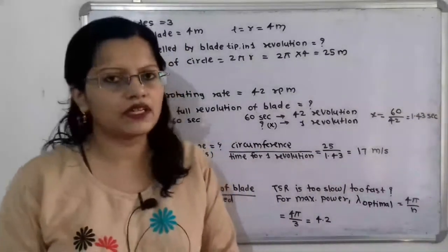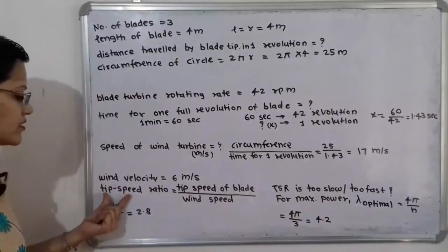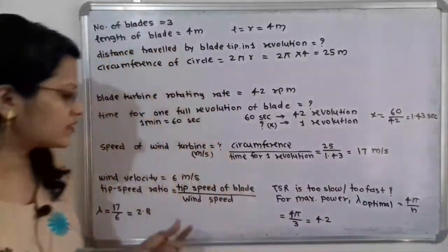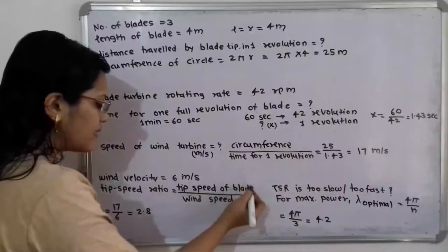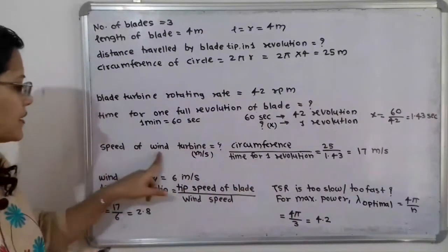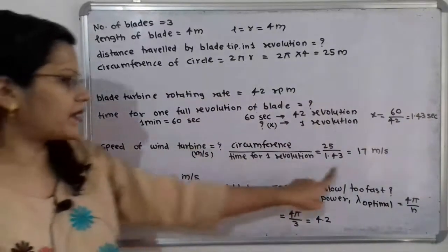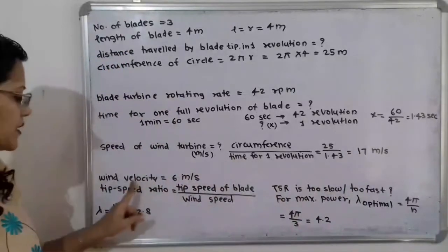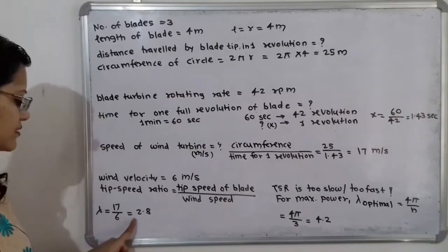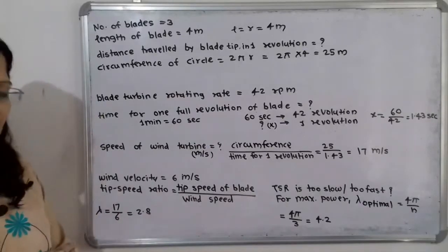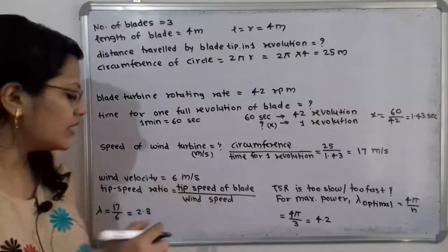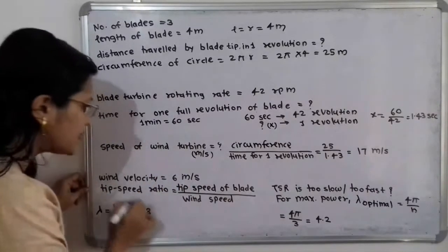The wind velocity is given as 6 meters per second. We now find the tip speed ratio, denoted lambda (λ). The formula is: λ = tip speed of the blade ÷ wind speed. The tip speed of the blade (speed of the wind turbine) is 17 meters per second and the wind speed is 6 meters per second. So λ = 17 ÷ 6 = 2.8. This ratio is dimensionless.